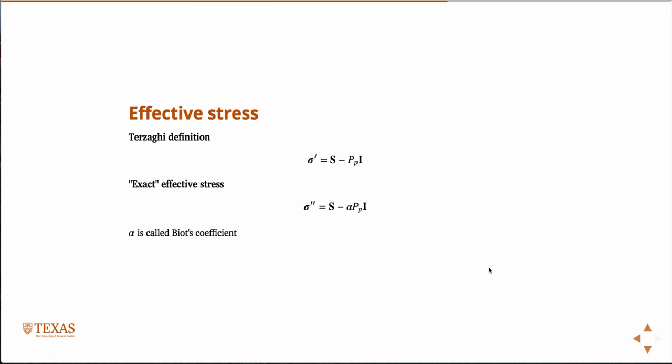This is primarily the definition we'll use in this class. This definition was introduced by Terzaghi. But there is something called an exact effective stress, or Biot effective stress, and it's got this little correction coefficient right here. It's called Biot's coefficient. Next time I'll show you how that arises and where that comes from. A lot of times it's a good approximation that this is one, and so it just recovers that. But in certain cases it may not be one, and you need to have it to have a good effective stress model.